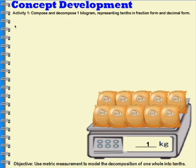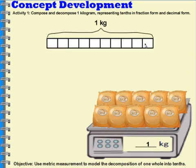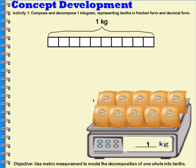In the first activity, it has a scale. The scale is showing ten bags of rice. When all ten bags of rice are on the scale, the weight is one kilogram. Let's take a look at what this would look like with a tape diagram. You would see that you have one kilogram being the whole. Your whole can be separated into ten different parts, and all of those parts are equal.